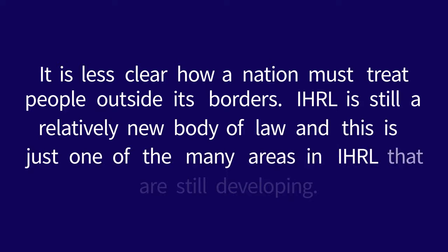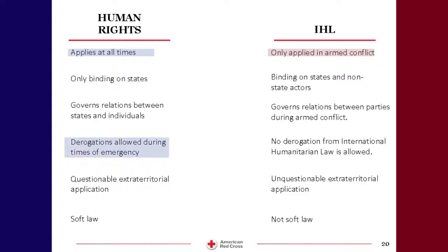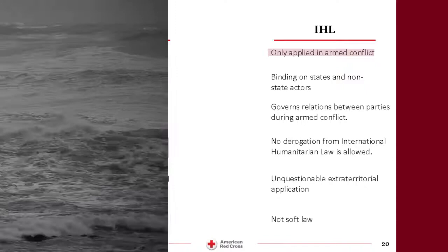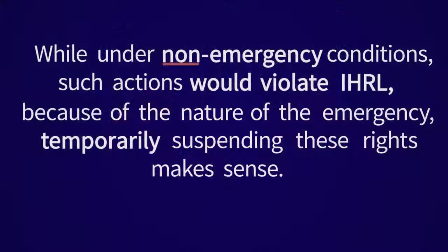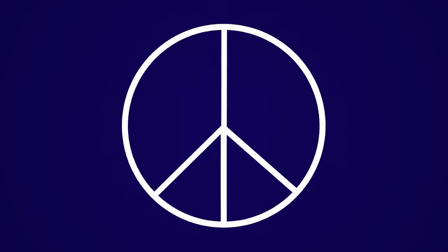IHRL recognizes that some derogation of human rights will be required during times of emergency. While fair treatment and protection of all is the goal of IHRL, the law recognizes that in time of emergency, a nation may not be able to allow people to enjoy all of their rights. For example, in a natural disaster such as a hurricane, the government may force people to leave their homes and not return until the storm has passed, and may even use force to detain people who refuse to leave. While under non-emergency conditions such actions would violate IHRL, because of the nature of the emergency, temporarily suspending these rights makes sense. In times of armed conflict, even more substantial rights may be suspended. However, IHRL may not be suspended permanently — once the emergency has passed, nations are required to ensure that individuals have access to their human rights.